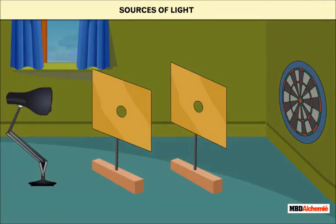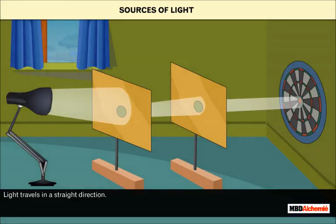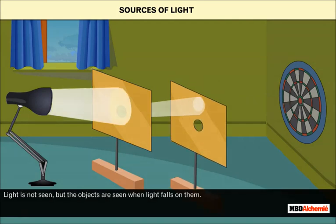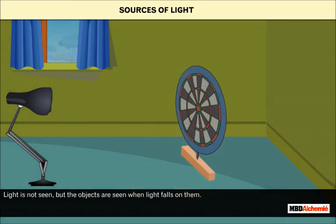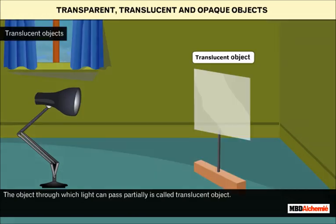Let us learn some properties of light. Light travels in a straight direction. Light is not seen, but the objects are seen when light falls on them.